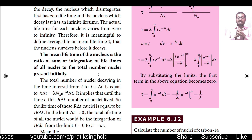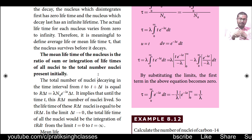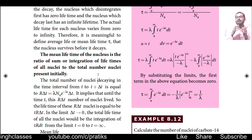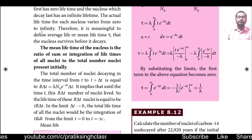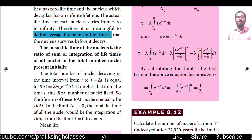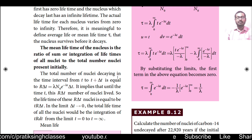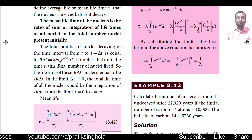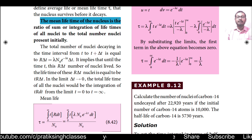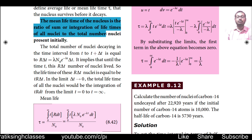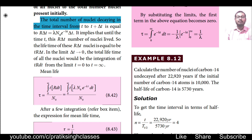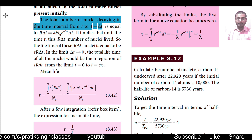The actual lifetime for each nucleus varies from 0 to infinity — we cannot say which atom will disintegrate first and which will disintegrate last. Therefore, it is meaningful to define the average or mean lifetime τ that the nucleus survives before it decays. The mean lifetime is the ratio of the sum of lifetimes of all nuclei to the total number of nuclei present initially.